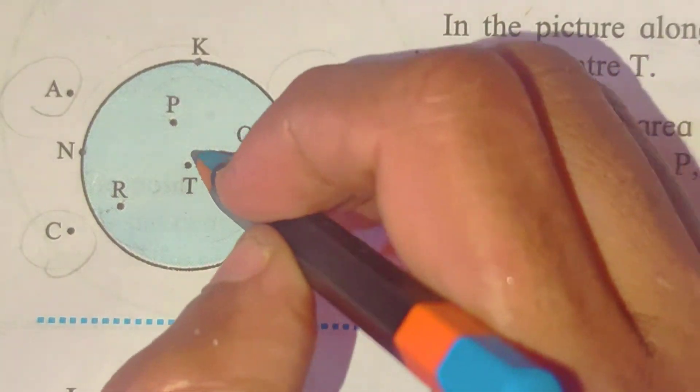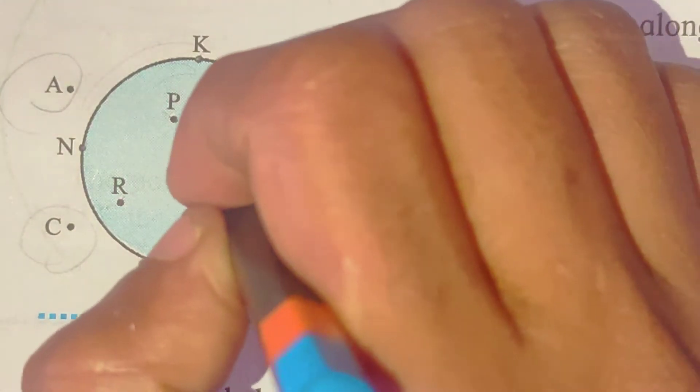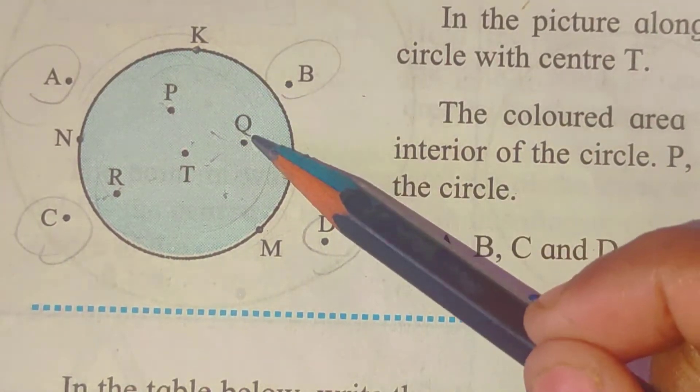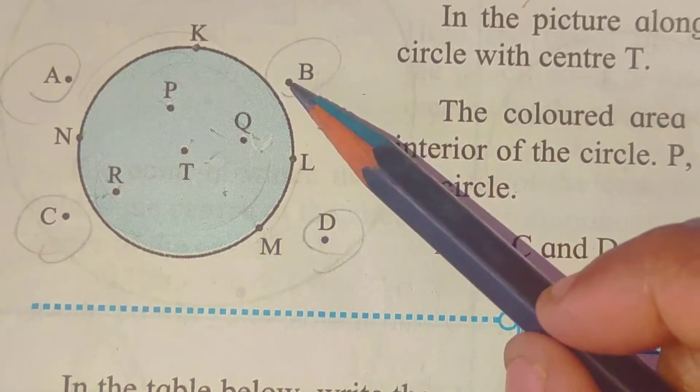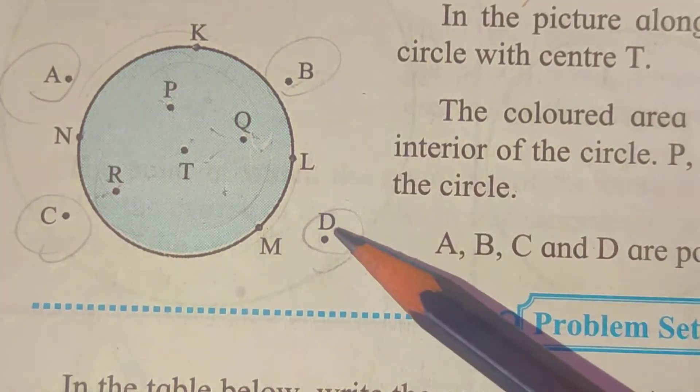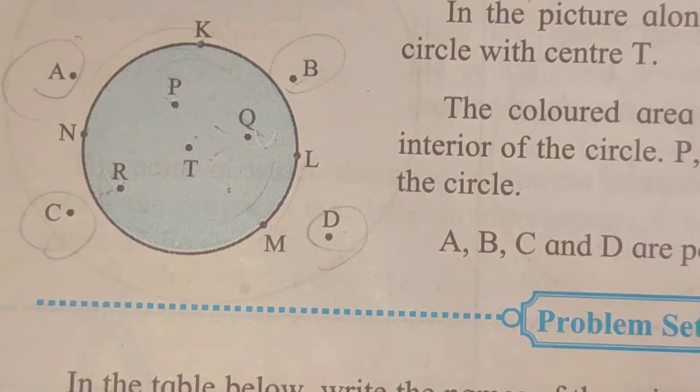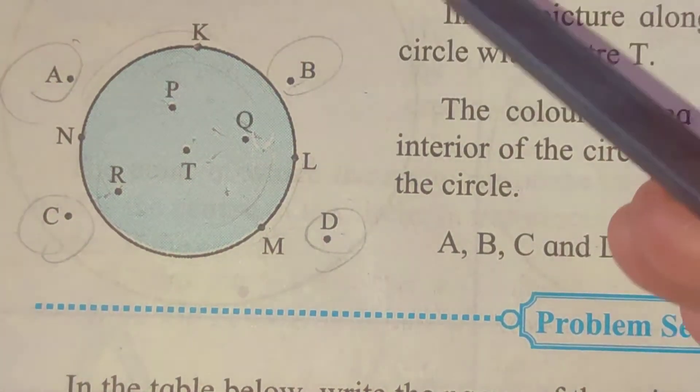The points inside are said to be interior. जो बाहर है, circle से दूर, उनको बोलते हैं exterior. X यानि बाहर होगे, exterior.